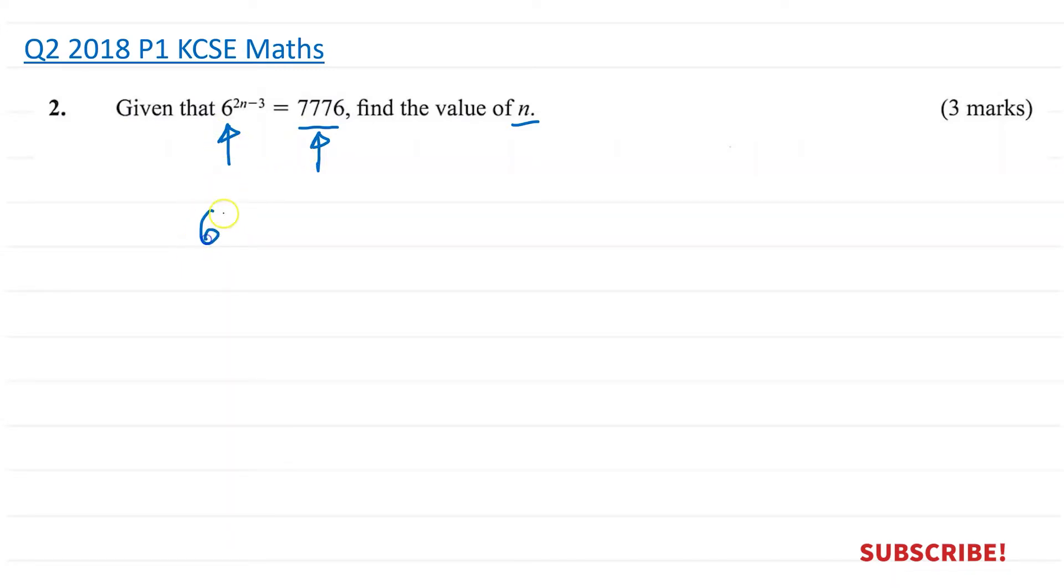So what we have here is 6^(2n-3) is equal to. Now if you convert this number as base 6 number, you will find out you will get 6 to the power 5. And I'm afraid you just have to do it, because you get 6 here, and you have to just try 6 times 6.